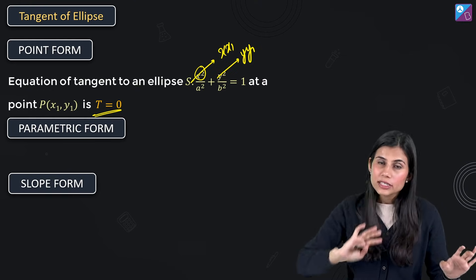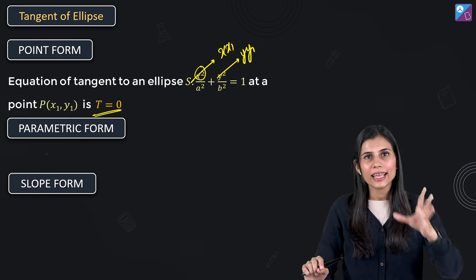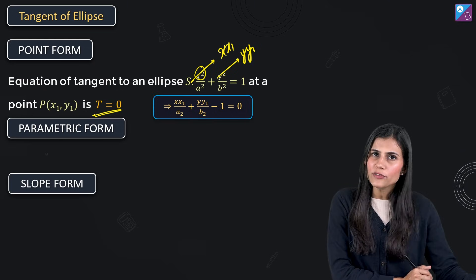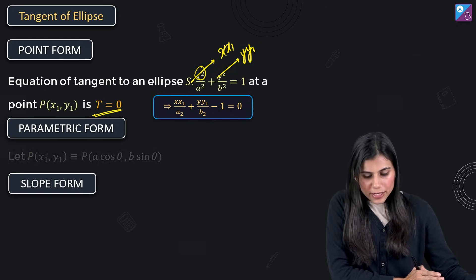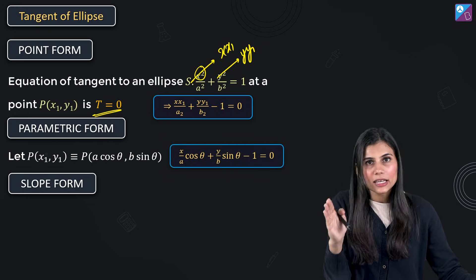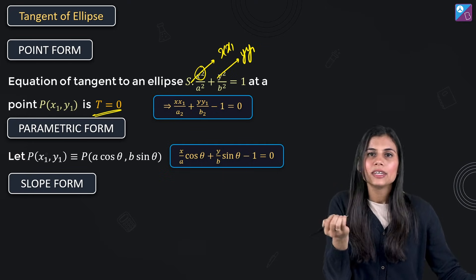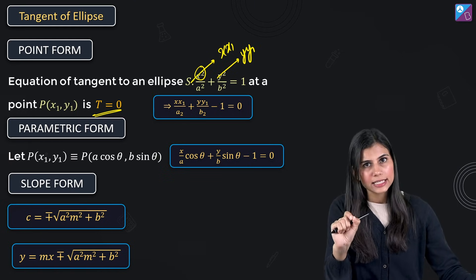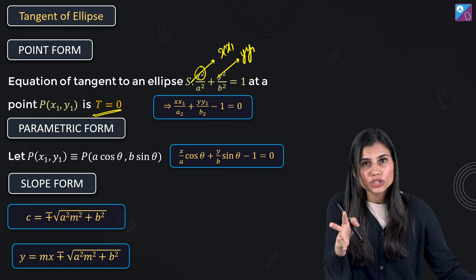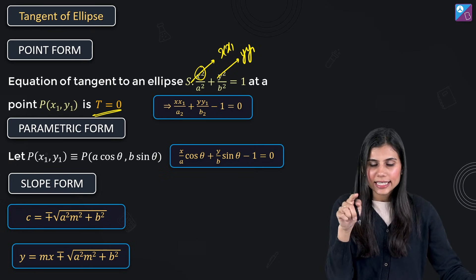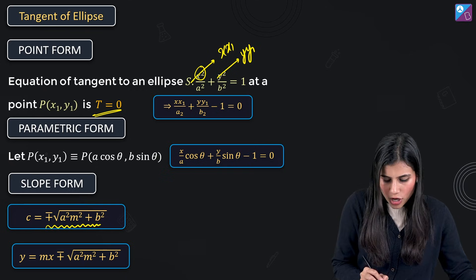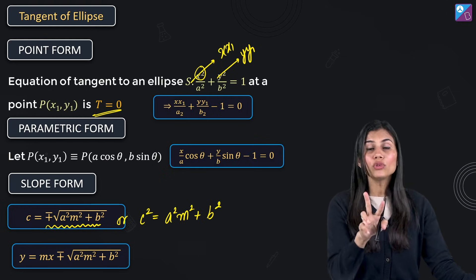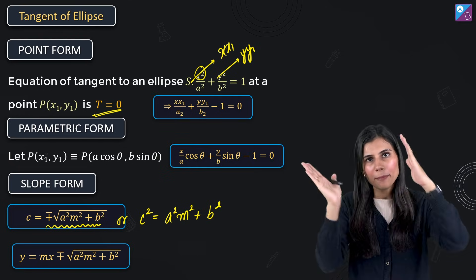T = 0 is universal — it gives the equation of tangent in point form for a parabola, ellipse, hyperbola, everything. For parametric form, substitute x1 = a cosθ and y1 = b sinθ into the point form to get the tangent in terms of sinθ and cosθ. For slope form, y = mx + c is a tangent to the standard horizontal ellipse provided c = ±√(a²m² + b²), or equivalently c² = a²m² + b². There are two tangents of the same slope, parallel to each other.